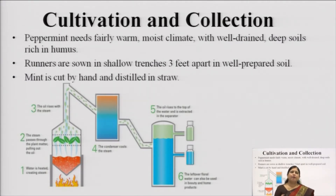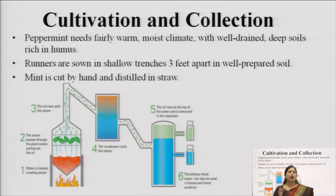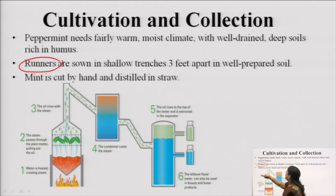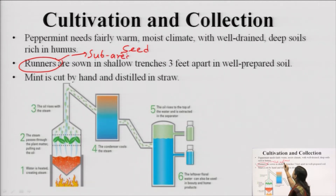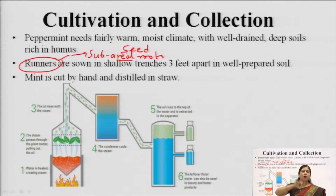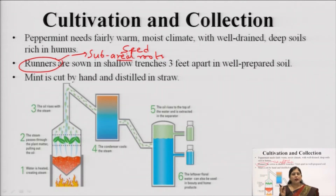For cultivation, peppermint generally requires a fairly warm, moist climate. A lot of moisture is required for germination of either the seeds or the runners. You can use seed propagation or you can use runners. Runners are basically sub-aerial roots present just adjacent to the surface of the ground — not in the air, not below the ground. These runners are cut into small pieces and used for vegetative propagation.